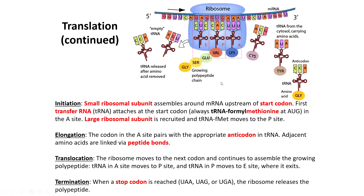After the first tRNA enters a methionine at the start site AUG, the large ribosomal subunit attaches and begins to move down towards the 3' end of the messenger RNA. During elongation, the codon in the A site will pair with the appropriate anticodon in the tRNA. This codon-anticodon pair is specific to a particular amino acid. Remember that there's redundancy in the genetic code, so one amino acid could be represented by multiple codon-anticodon pairs. When there is a tRNA in the A site and one already in the P site — at the beginning of elongation that one is methionine — adjacent amino acids are linked together by peptide bonds between amino acids in the P site and the A site.